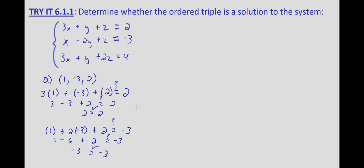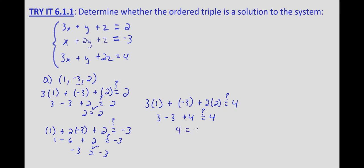Last but not least, we use our last equation: 3x plus y plus 2z equals 4. Does it work? So 3 times 1, plus negative 3, plus 2 times 2 — does that equal 4? So 3 minus 3 plus 4 — 3 minus 3 is 0, so we're left with 4. Does that equal 4? Yes. So 1, negative 3, 2 is a solution.